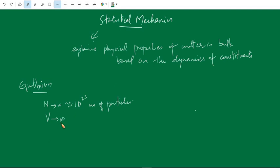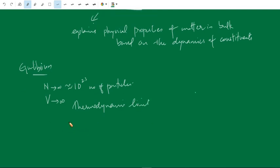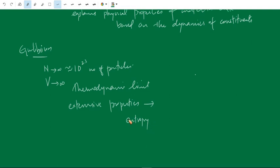Because N is very large and V also is large compared to the volume of a molecule or atom — this is the thermodynamic limit. In this limit there are extensive properties: quantities which depend on the size of the system. For example, entropy — the entropy of the system increases as the volume of the system increases. These kinds of properties are called extensive properties or extensive quantities.